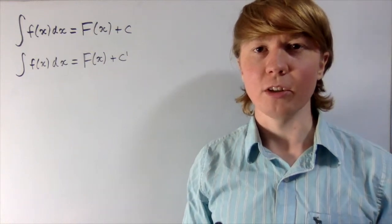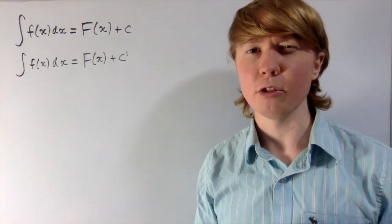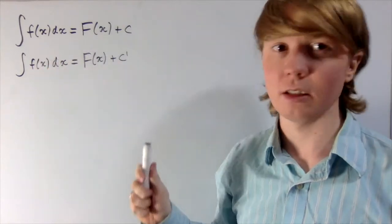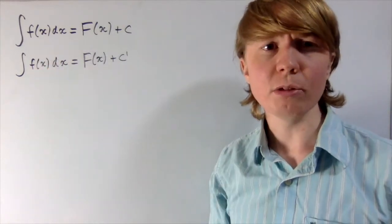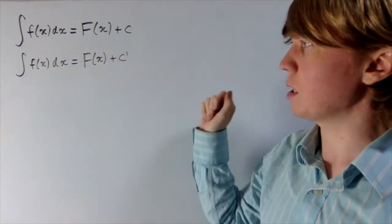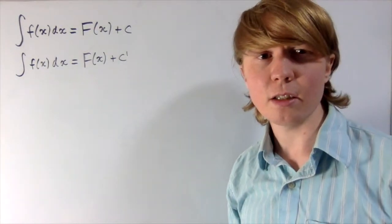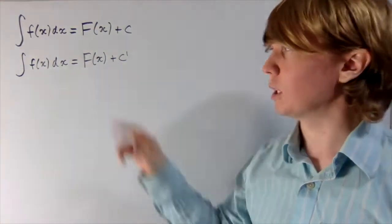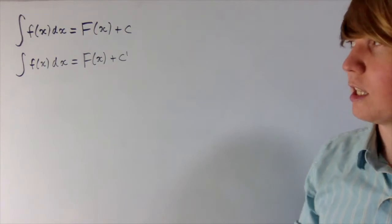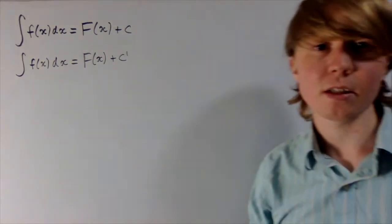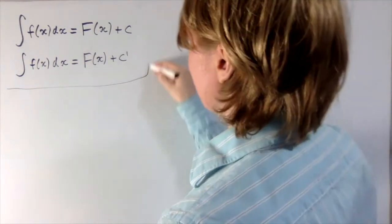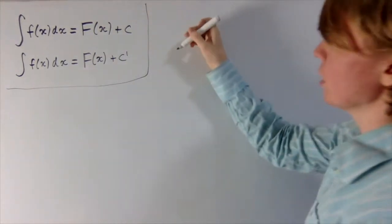Let's have a look at an interesting phenomenon here where if you're integrating a certain function, doing an indefinite integral like this, if you integrate it one way you might get a certain constant plus c, and if you integrate it using a different method you might get a certain constant plus c dash, and these two constants might be slightly different. So let's have a look at what's going on here through an example.